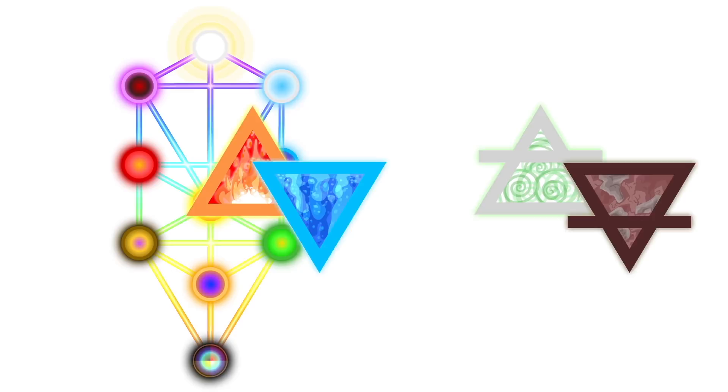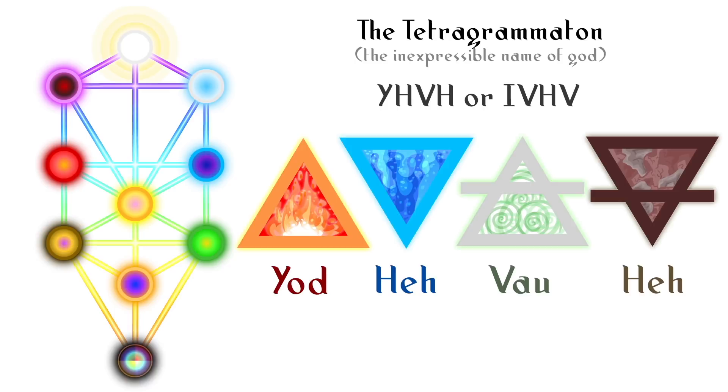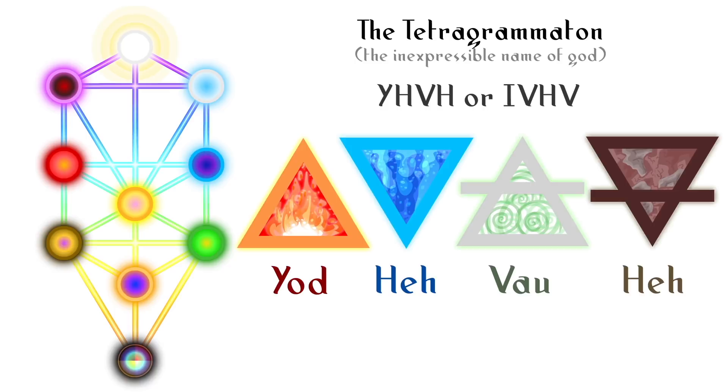It is also worth noting that the four elements play a very symbolic relationship to the tree of life, which attempts to express the inexpressible name of God through the tetragrammaton, Yod-He-Vau-He. Yod being fire, the male symbol of forces that set the creative process in motion.